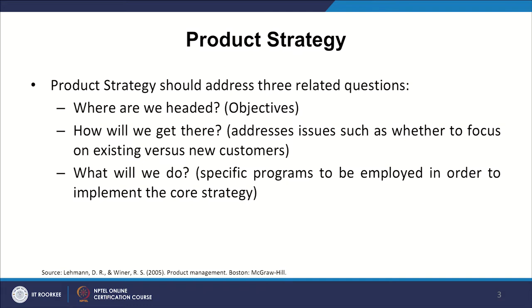Product strategy should address three related questions. The first is: where are we headed? That is, objectives. We have been mentioning objectives in the course of planning as well. Here, because strategy is related to execution, we have a composite plan in place. We are taking it further in terms of implementation and execution. The formulation perspective we considered while planning. Although strategy has a component of formulation, here we focus more on execution and implementation. That is why we revisit objectives, which gives us a direction and a time frame — the most important element when talking of strategy.